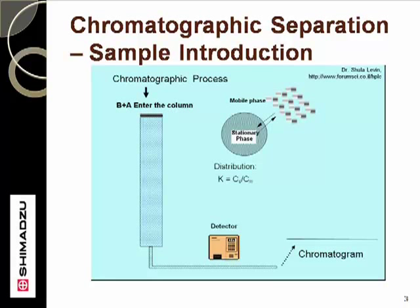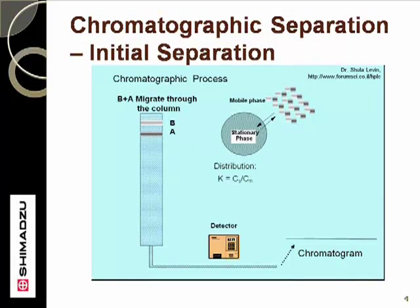This is a crude depiction of the separation and detection process. The sample is applied to the inlet of the column, typically by some sort of injection device. This mixture — compounds A and B — have different levels of interaction with the stationary phase. The A component has a much weaker attraction to the stationary phase than does component B. Therefore, the A component elutes through the column at a faster rate.